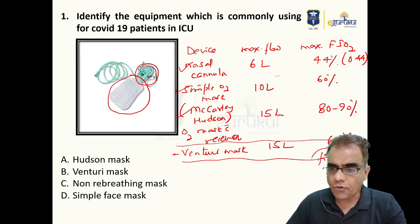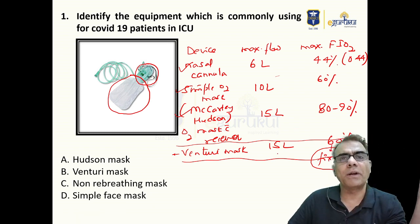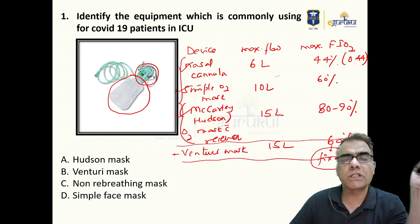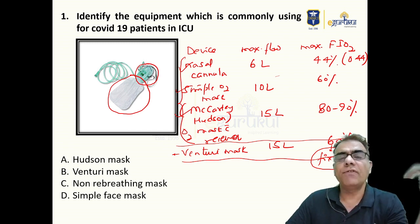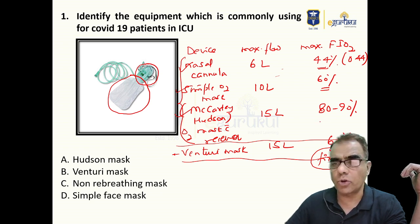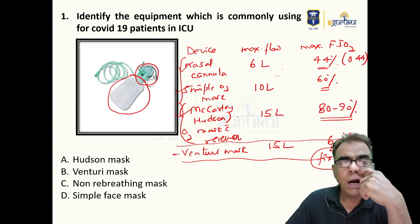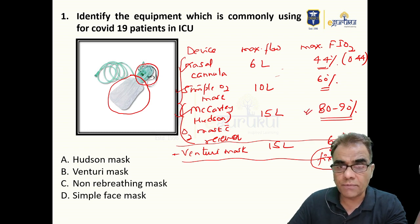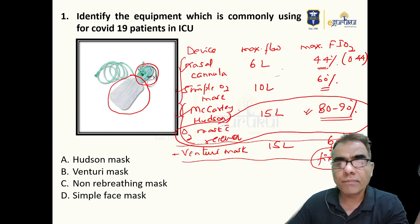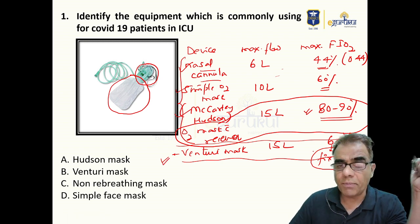The key difference is that Venturi mask's 60% is fixed — if you set 15L with a Venturi mask delivering 60%, it will deliver exactly 60% regardless of changes in patient respiratory parameters. While the performance of low flow systems like nasal cannula, simple oxygen mask, or mask with reservoir can vary with the patient's respiratory parameters. Clinically, if accuracy is very important, prefer the Venturi mask.